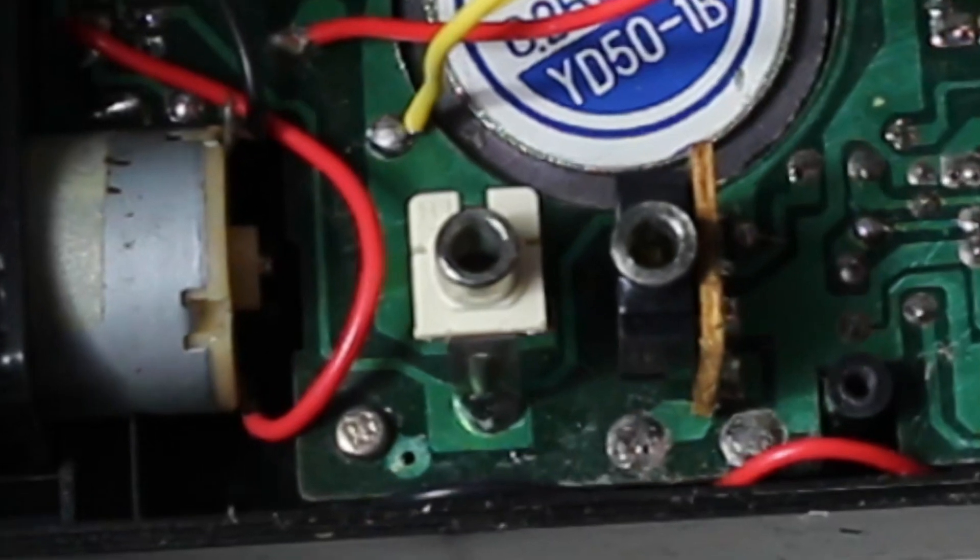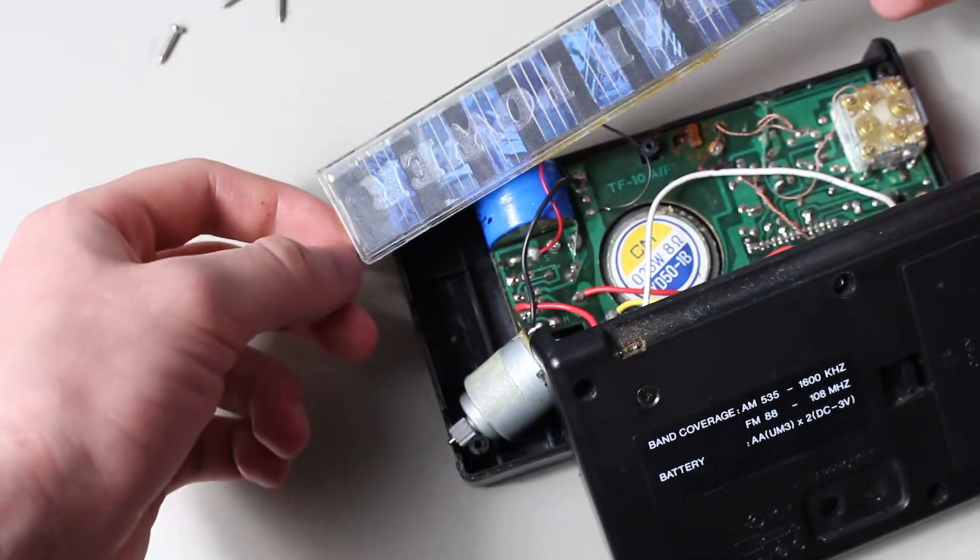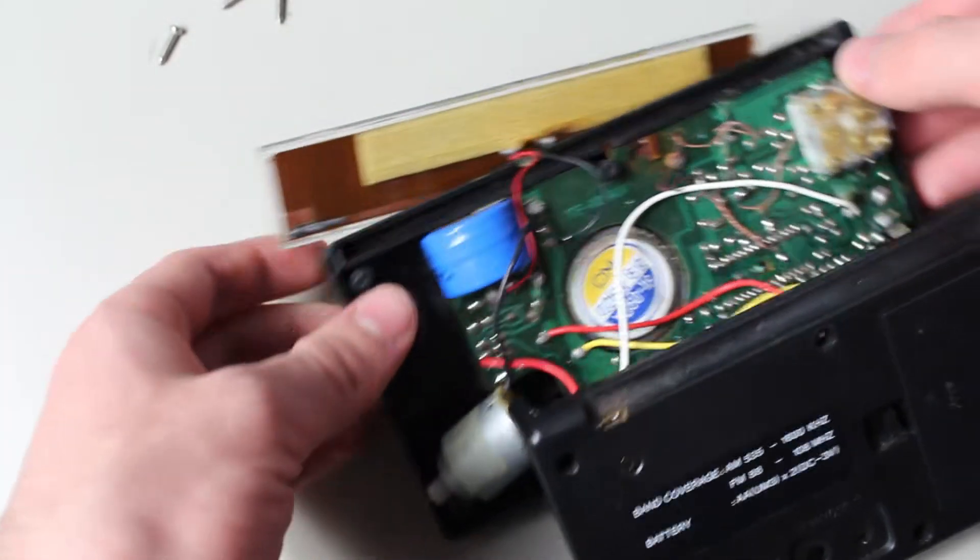Continuing, we can also see the two sockets for the 3V charging and the headphone out. At the top, we find the solar panel. Nothing too surprising there. So far, at least visually, nothing seems to be wrong.